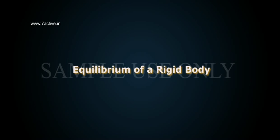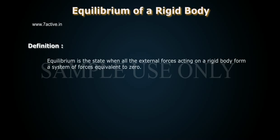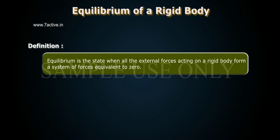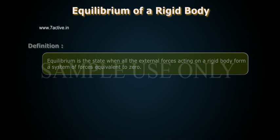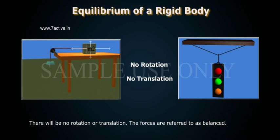Equilibrium of a Rigid Body. Equilibrium is the state when all the external forces acting on a rigid body form a system of forces equivalent to zero. There will be no rotation or translation. The forces are referred to as balanced.